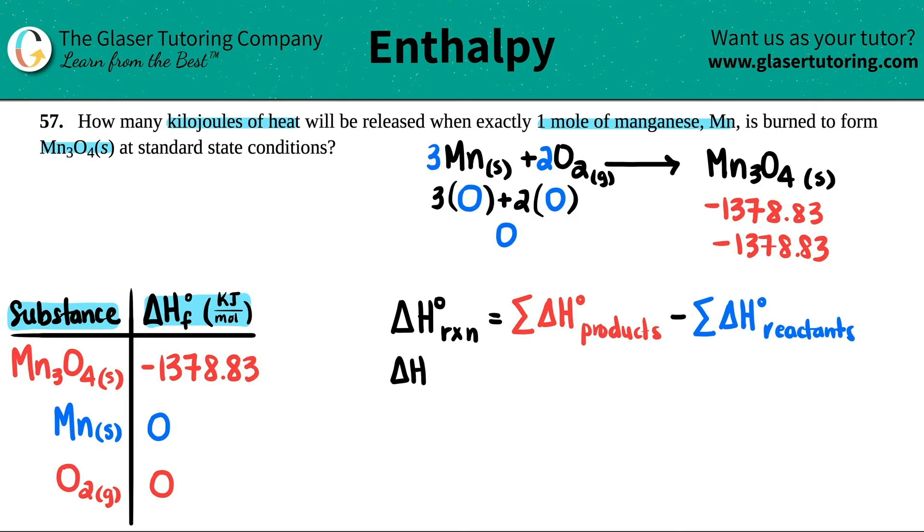Now I have two numbers - this is the sum of all the reactants, this is the sum of all the products. Now I can find out my delta H. My delta H for the reaction would be products, which is negative 1378.83, minus the reactants, which is zero. So my delta H for this would be just the negative 1378.83 kilojoules per mole.